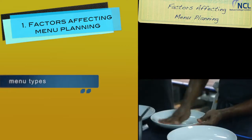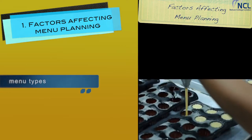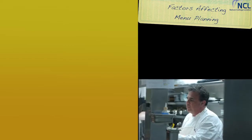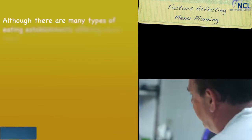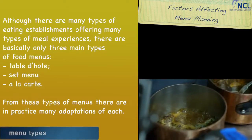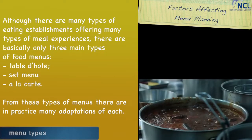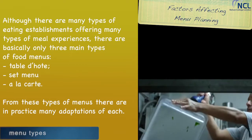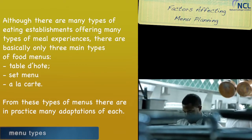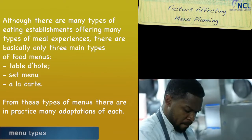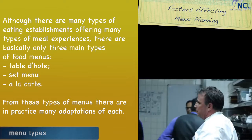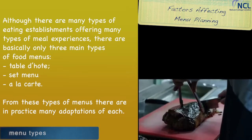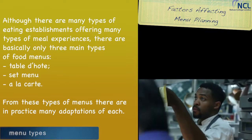Now we will talk about types of menus. Although there are many types of eating establishments offering many types of meal experiences, there are basically only three main types of food menus: table d'hôte, set menu, and à la carte.